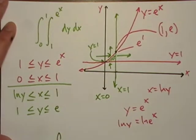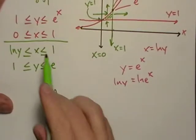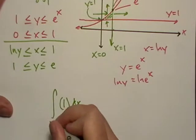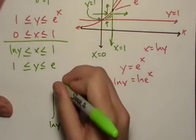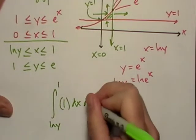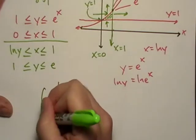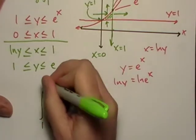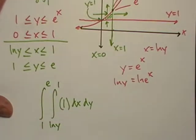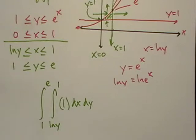We're taking the integral of 1 with respect to x, and what do we have? We had natural log of y, up to 1. Now we're going to do dy, and let's see here. We got 1 all the way to e. And that, folks, is how we do it. It should be how we do it at least.